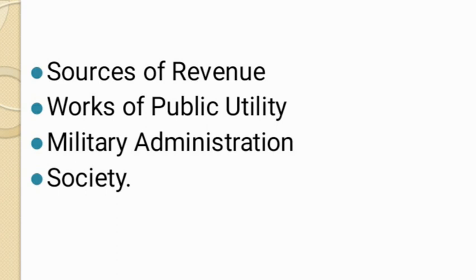Sources of revenue: the Cholas collected taxes from peasants, traders, and merchants. Taxes were also levied on mines and imported goods. Works of public utility: a part of the revenue was spent on the king's family and army, while money collected from rulers was spent on buildings, roads, construction of tanks, and irrigation systems. Military administration: the Cholas built a powerful army and strong navy. The army included archers, foot soldiers, horsemen, and war elephants. The navy protected islands and sea routes.